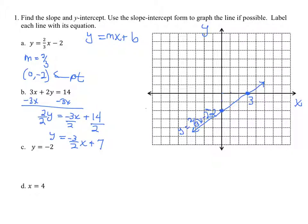And now I'm going to graph the line. The slope is equal to negative 3 over 2. The y-intercept is 0, 7. So we start with the point, 0, 7.